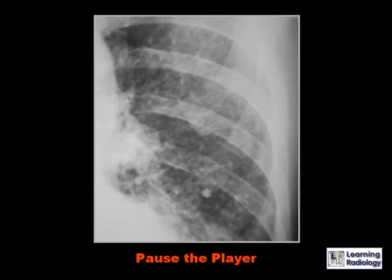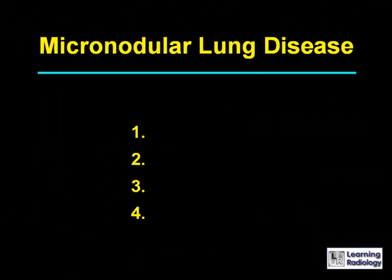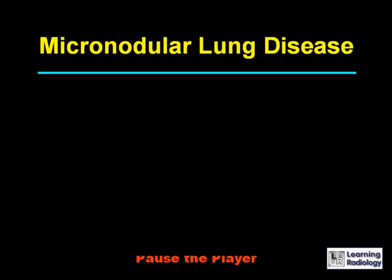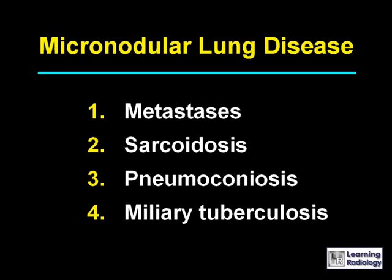This is the next differential: micronodular lung disease. There are four causes: metastases, sarcoidosis, pneumoconiosis, and miliary tuberculosis.